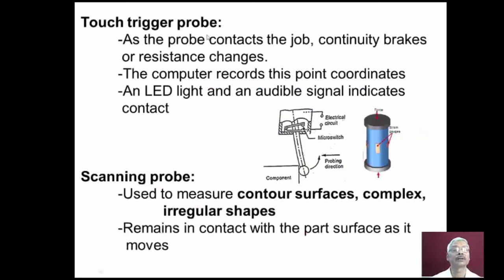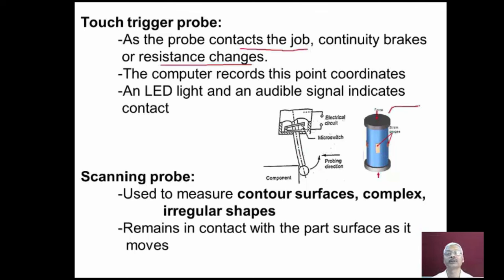In the case of a touch trigger probe, as the probe contacts the job, the continuity breaks or resistance changes. If it is a probe with a micro switch type, the micro switch gets opened and the signal is sent to the CMM software. If it is a probe based on strain gauges, when the probe deflects, the resistance of the strain gauge changes and hence the signal is sent to the software. The computer records this point's coordinates whenever the probe comes in contact with the component. An LED light and an audible signal indicate the contact.